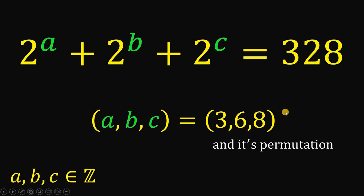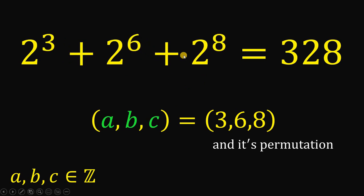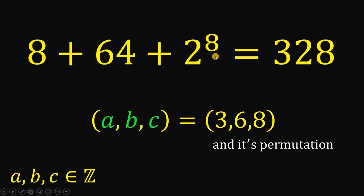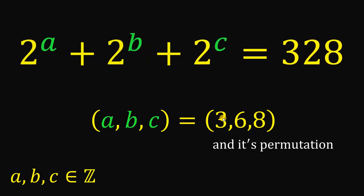Alright, but before that, let's check if our answer is correct. Let's replace A, B, and C with 3, 6, and 8. Now, 2 raised to 3 equals 8, 2 raised to 6 equals 64, and 2 raised to 8 equals 256. Then 8 plus 64 equals 72, and 72 plus 256 is definitely equal to 328. Therefore, our answer is correct. Our final answer is A equals 3, B equals 6, and C equals 8, and their permutations.